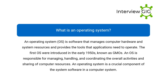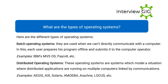What are the types of operating systems? Here are the different types: Batch operating systems — they are used when we can't directly communicate with a computer. In this type, each user prepares their program offline and submits it to the computer operator. Examples include IBM's MVS OS, payroll systems, etc.